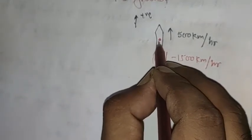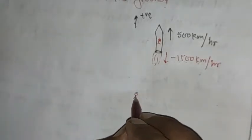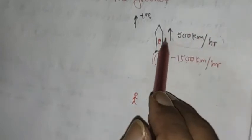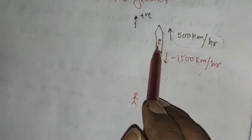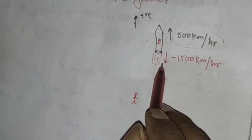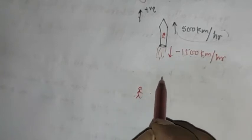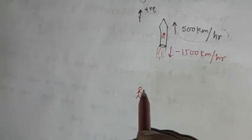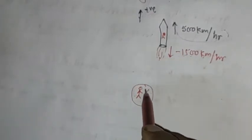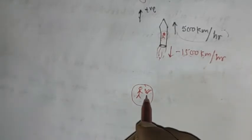One person is standing on the ground watching the airplane and observes its velocity is 500 km per hour. A person sitting on the airplane says the combustion speed is 1500 km per hour. Now our question is: what will be the combustion speed as observed from the ground frame of reference? According to the person on the plane it is minus 1500 km per hour — but what will it be according to the ground observer?